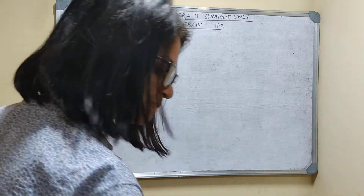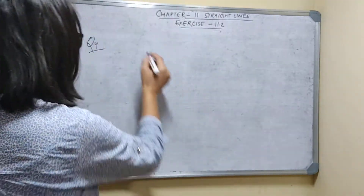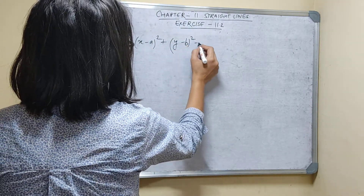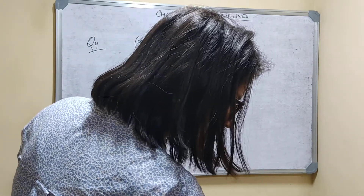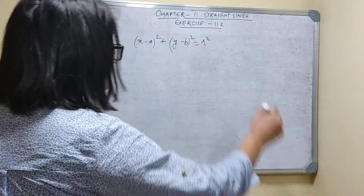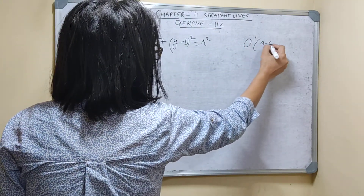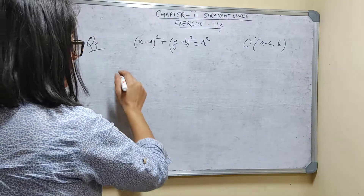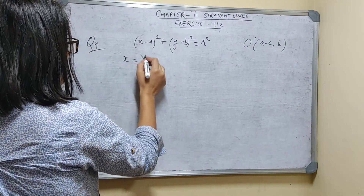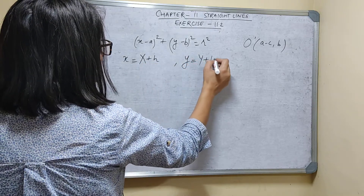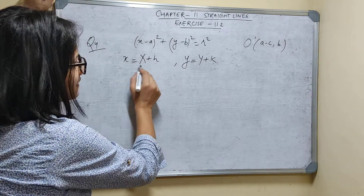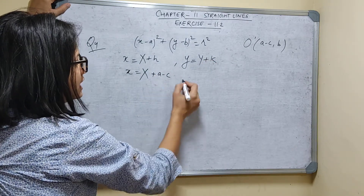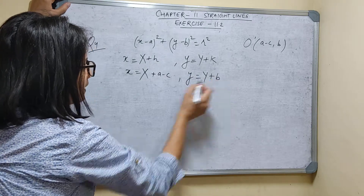Question 4: What does the equation (X - A)² + (Y - B)² = R² become when the axes are transferred to parallel axes through the point O' = (A - C, B)? So H = A - C and K = B. You know X = capital X + H and Y = capital Y + K.